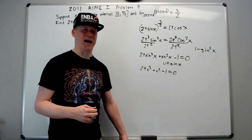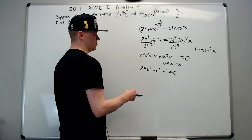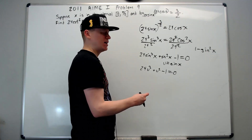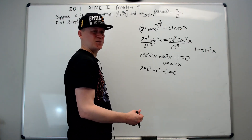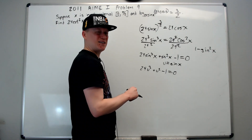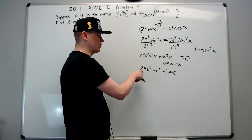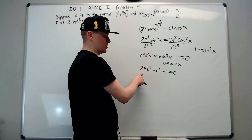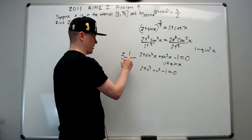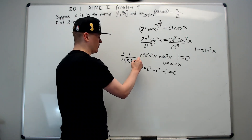We have a polynomial in sine of x. If we let u equal sine of x, it says 24u cubed plus u squared minus one equals zero. It's not easy to factor, so we're going to try synthetic division. This relies on the rational root theorem from pre-calculus: any possible rational roots must be a factor of the constant over the leading coefficient. So it could be plus or minus one over any of the factors of 24 — that's 24, 12, 8, 6, 4, 3, 2, and 1.